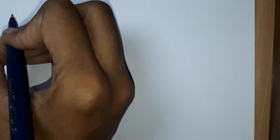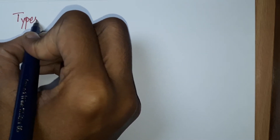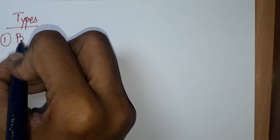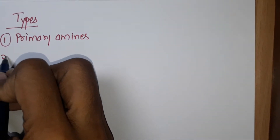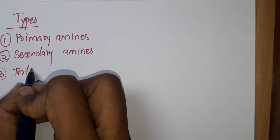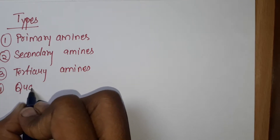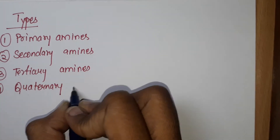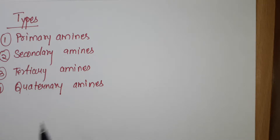Now, classification of amines. I think you all know amines are of four types. First one: primary amines. Second one: secondary amines. Next: tertiary amines. And the last one is quaternary amines. Now I will give you one example of each.